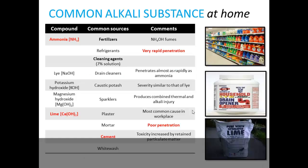The alkaline substances include ammonia, present in fertilizers and cleaning agents, which has very rapid penetration; sodium hydroxide; potassium hydroxide; magnesium hydroxide; and calcium hydroxide in the form of lime, commonly seen in cement — one thing to note is that lime has very poor penetration.